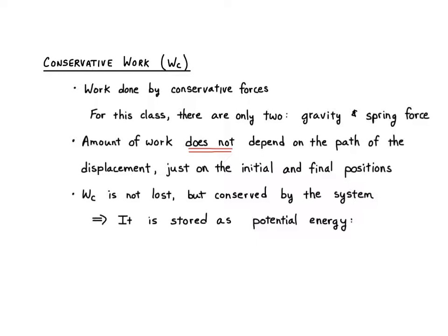Conservative work is not lost but conserved by the system — it is stored as what we call potential energy. There is a unique formula for this: Wc equals negative delta U, meaning conservative work equals the negative of the change in potential energy. Potential energy is another form of energy, like kinetic energy, but stored rather than due to motion. There are only two types we care about: gravitational and spring potential energy.